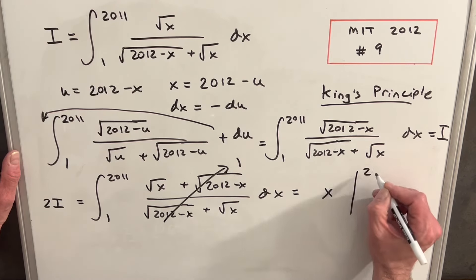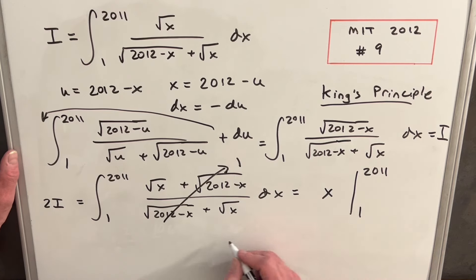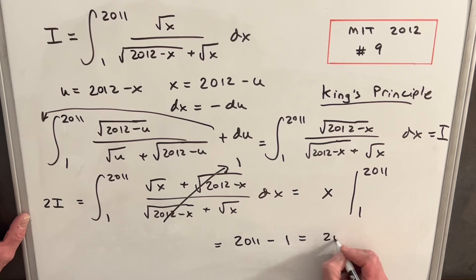So we integrate and we get x, and we just have to evaluate it from one to 2011. This will just be 2011 minus one, which equals 2010.